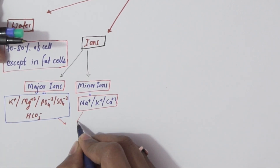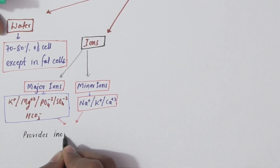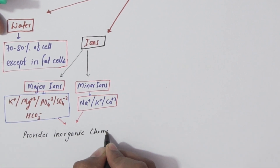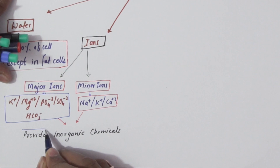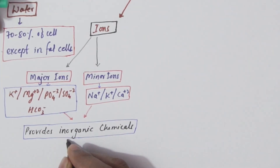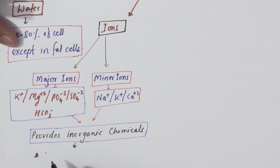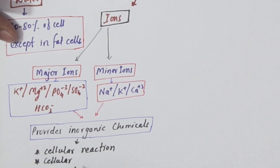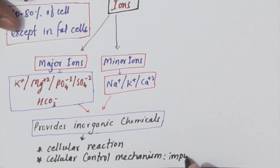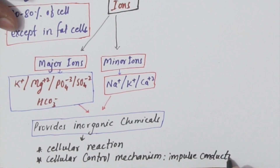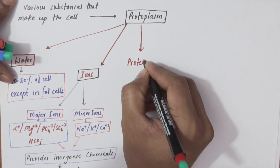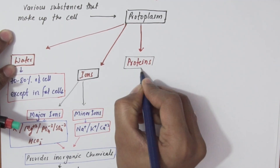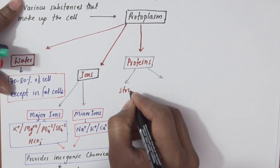These ions provide inorganic chemicals to the cell for two important functions: one is cellular reactions which are always ongoing, and the other is cellular control mechanisms such as impulse conduction. The third component is proteins, which account for 10 to 20 percent of total cell mass.